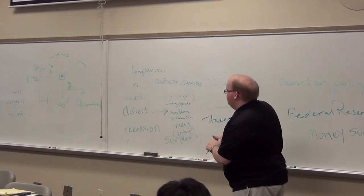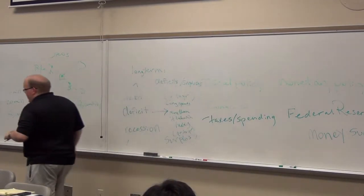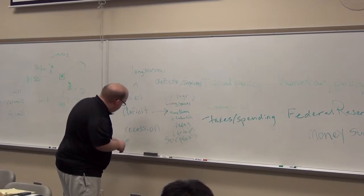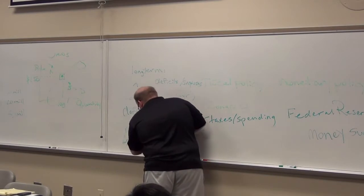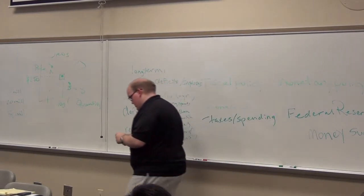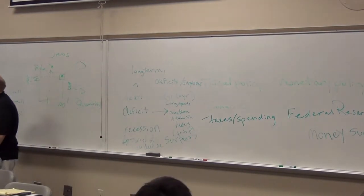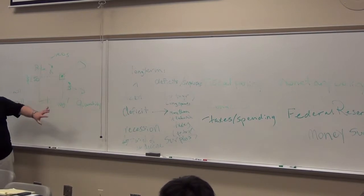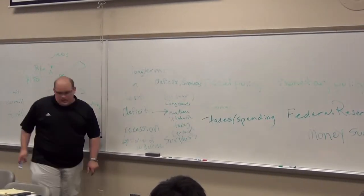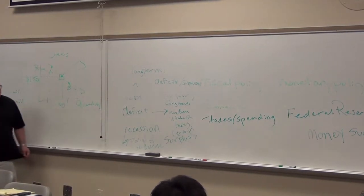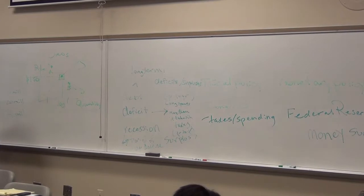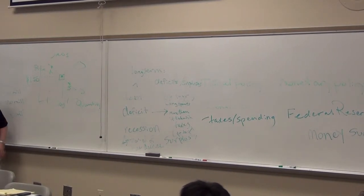The recession — different people define it in different ways, but essentially it's a period of economic decline over several months. Most people measure it in quarters — three months. It would be a period of decline in GDP. If GDP goes down in two consecutive periods, we start to discuss a recession. Recession is not a good thing in economics — we don't like them, but we know they happen. All of this is related to monetary policy. Who controls monetary policy in the United States? The Federal Reserve.